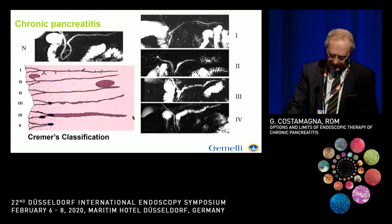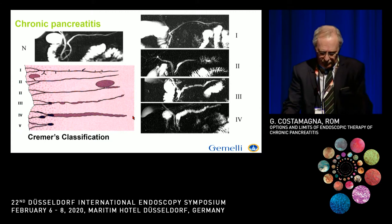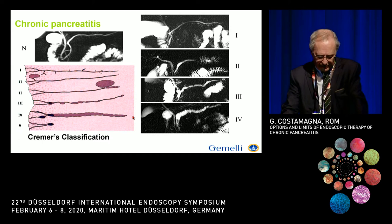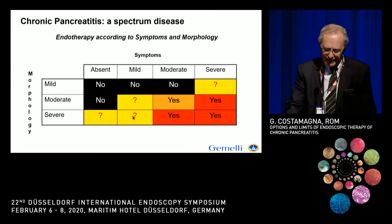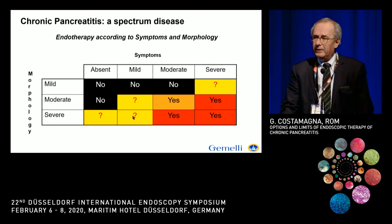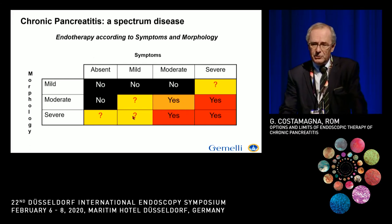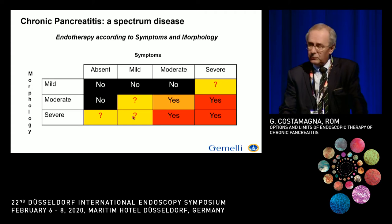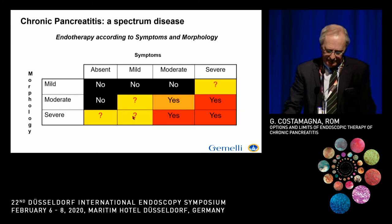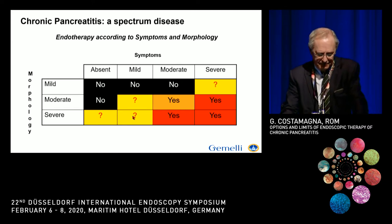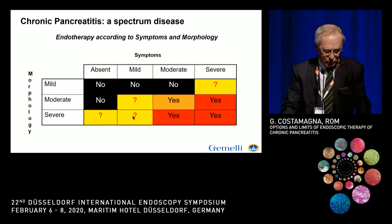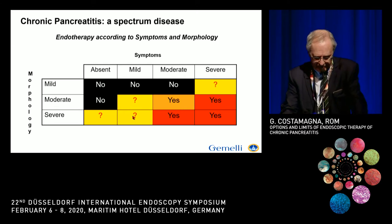The best candidates are patients that have an obstructed duct due to a stone or a stricture in the head of the pancreas. We must be very careful not to treat the images of the patient, but to treat patients. To make a good candidate for therapy, the patient must be symptomatic, and the morphology should be at least moderate or severe.